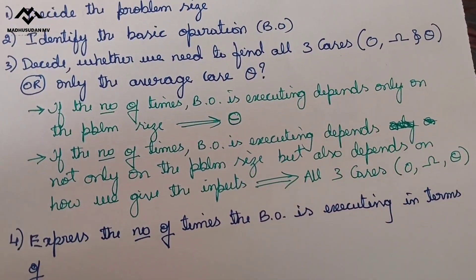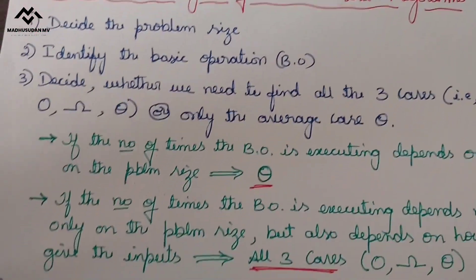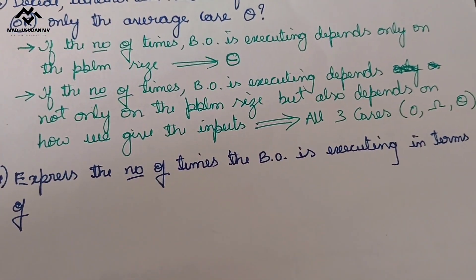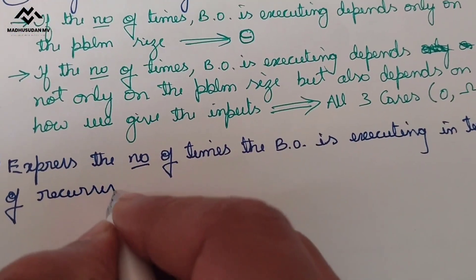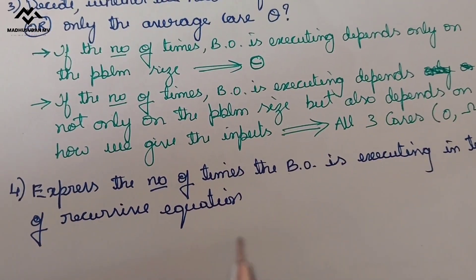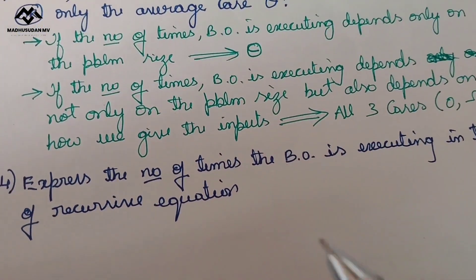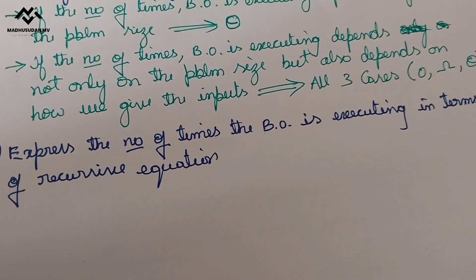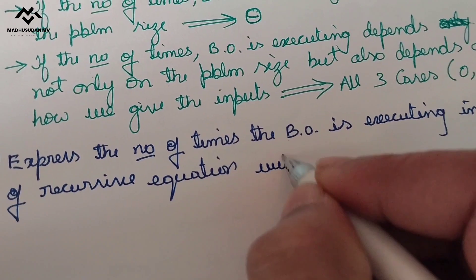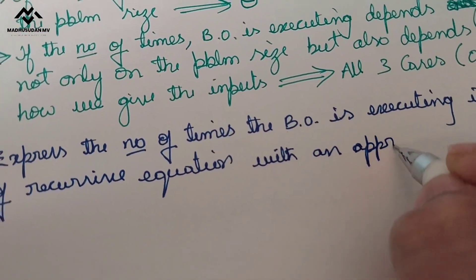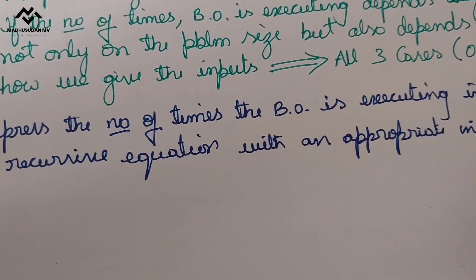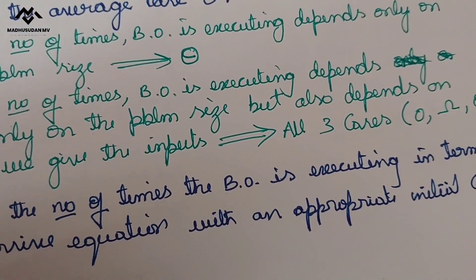The fourth step is to express the number of times the basic operation executes — but unlike non-recursive algorithms where we expressed it as a summation expression, here we express it in terms of a recursive equation. Also important: since the function must stop at some point, we need an appropriate initial condition, also called the terminal condition or base condition.